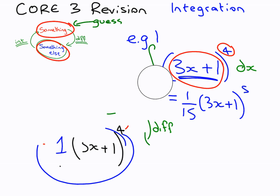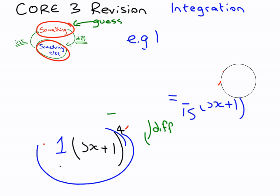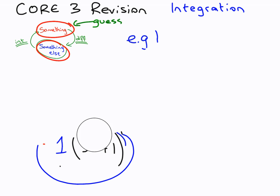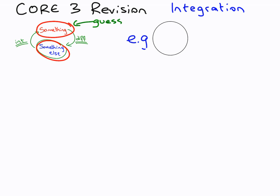The next example that we're going to do is still going to be something to a power, but it's going to be to the power of negative 1. So example 2 is going to be the integral of 5 minus 2x to the power of minus 1.